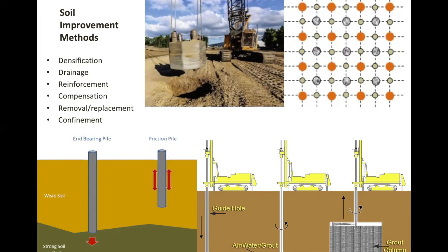One method, densification, is often the practice of compacting the soil. The idea is that the soil compacts during liquefaction, going from large pore space to smaller pore space. And if the area is pre-compacted before the event, then the change in pore space doesn't occur, and pore pressure doesn't increase, which means liquefaction is less likely to happen.